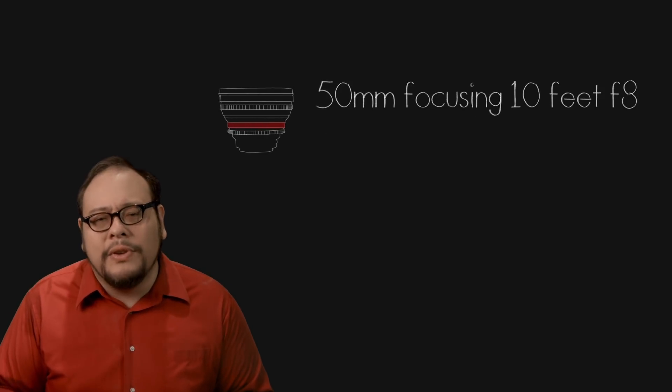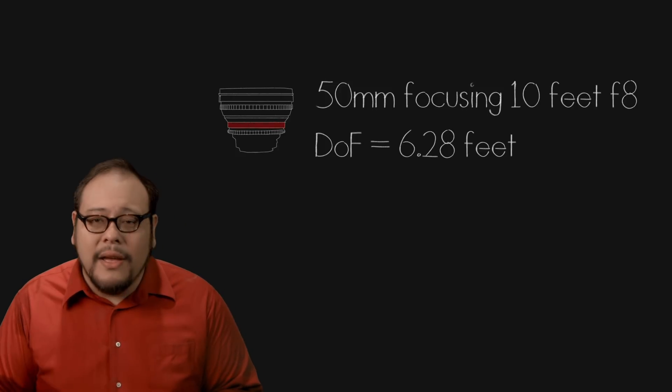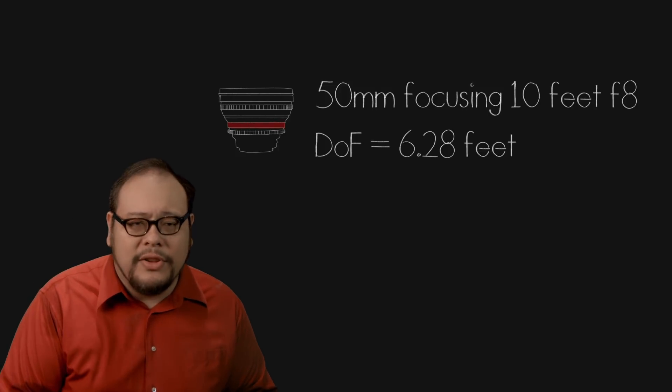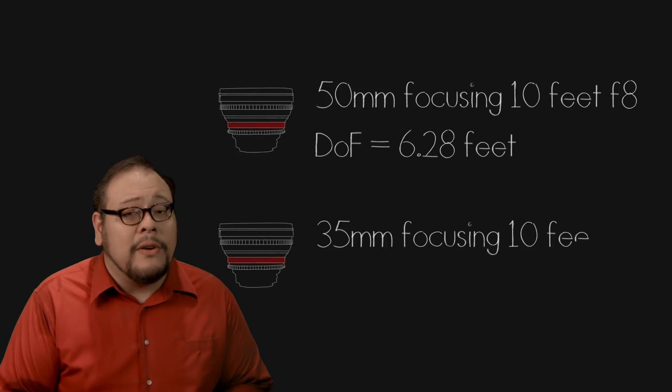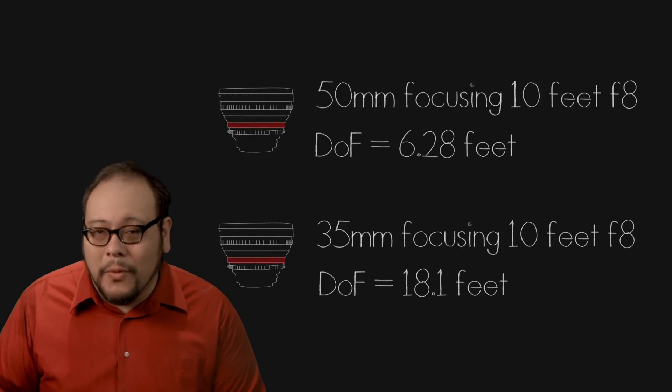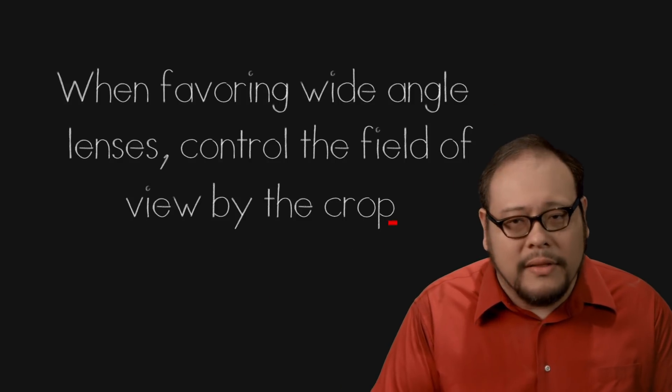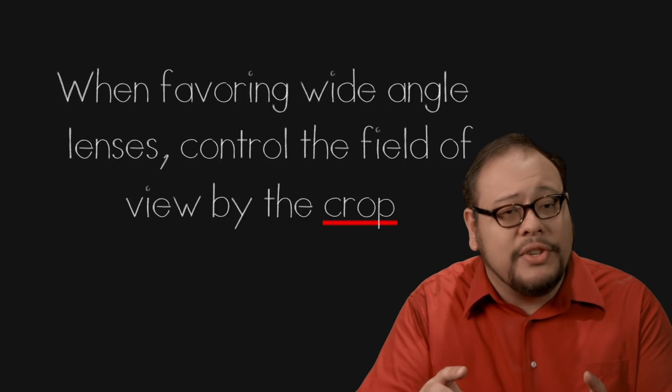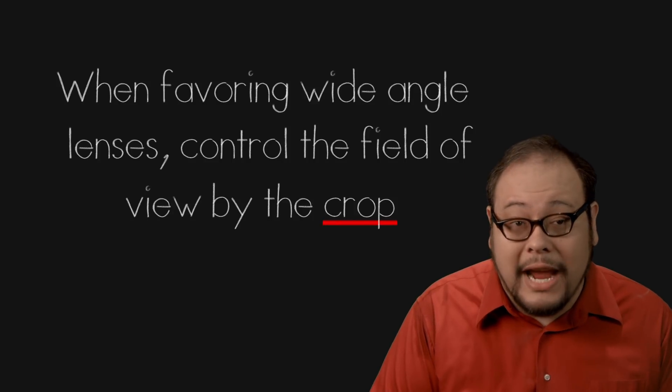For instance, a 50mm on a full frame focusing at 10 feet at f8 would only have a depth of field of 6.28 feet. But a 35mm on the same sensor shooting 10 feet at f8 would have a depth of field of 18.1 feet — a huge difference. So now we're on a balancing act. Wide angle lenses give us the depth of field we need, but the field of view may be too wide for our subject. In this case we can control the field of view by cropping in on the image or by using a smaller sensor camera.